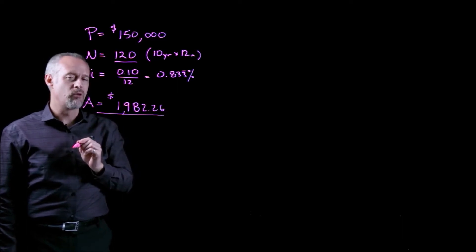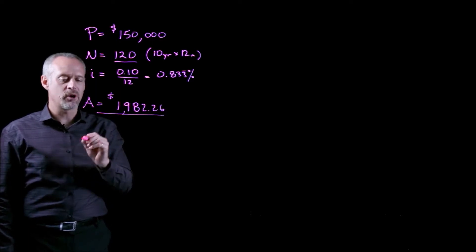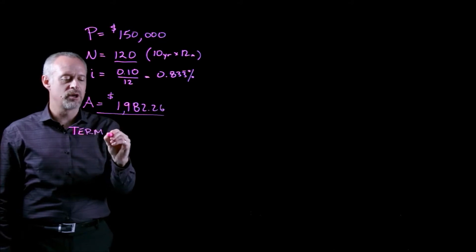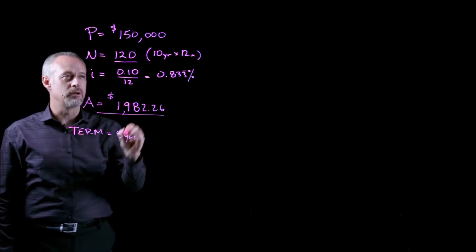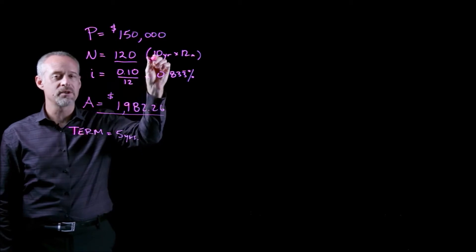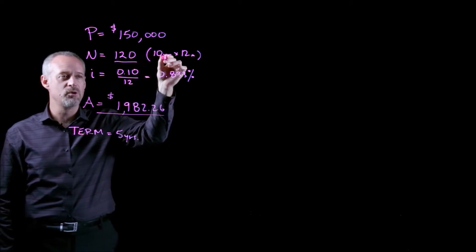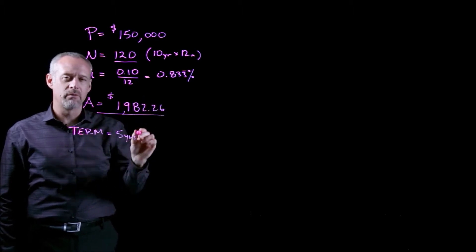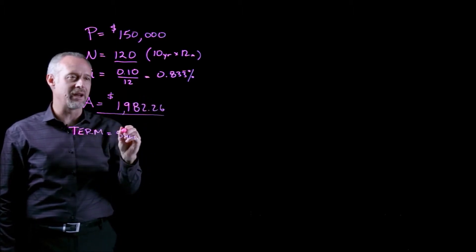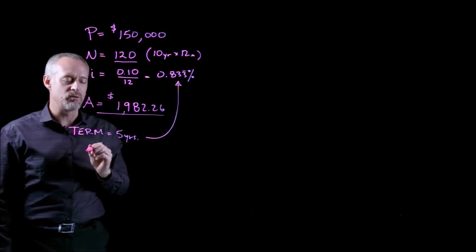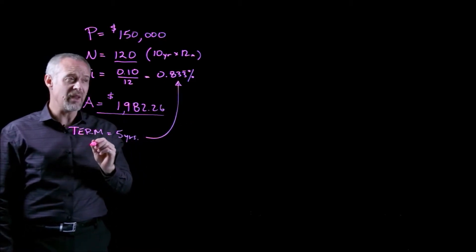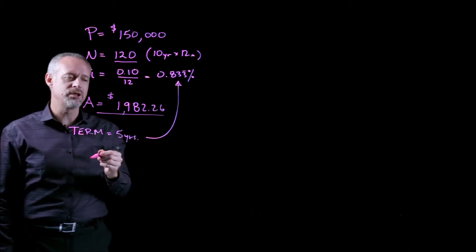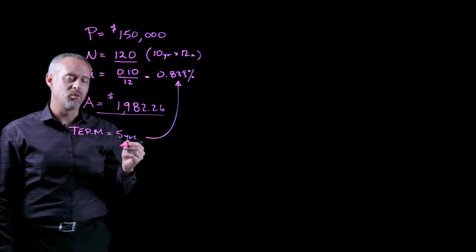However, recall from that problem that there was something called the term, and the term of the mortgage was equal to 5 years, not 10 years. 10 years was the amortization period. That's what we used to calculate the monthly payments. But the term was the deal with the bank for how long this interest rate would still apply. At the end of five years, the borrower needs to renegotiate the terms of the mortgage with the bank.